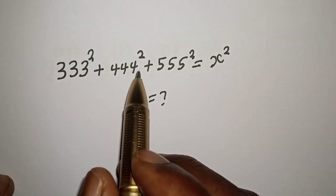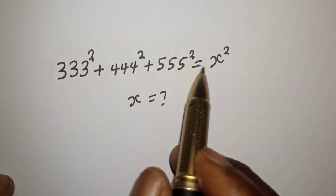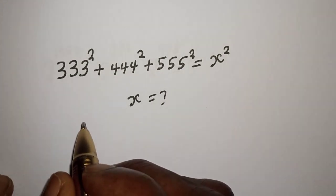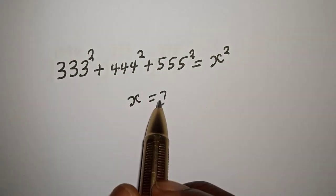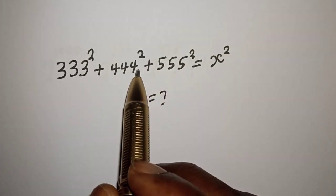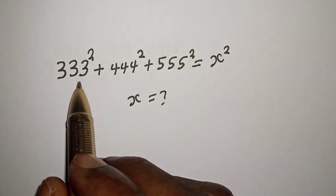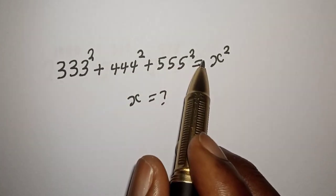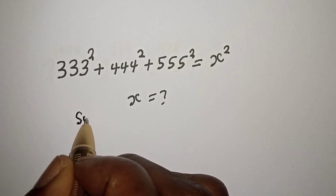333 squared plus 444 squared plus 555 squared is equal to s squared. What is the value of s? Hi everyone, welcome to my class. In this class we want to find the value of s from this nice equation. Before we proceed, please don't forget to like, share, comment, and subscribe.